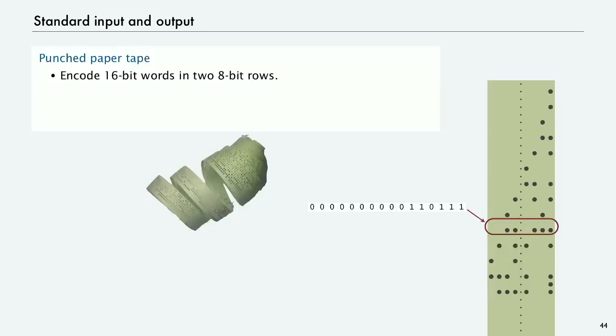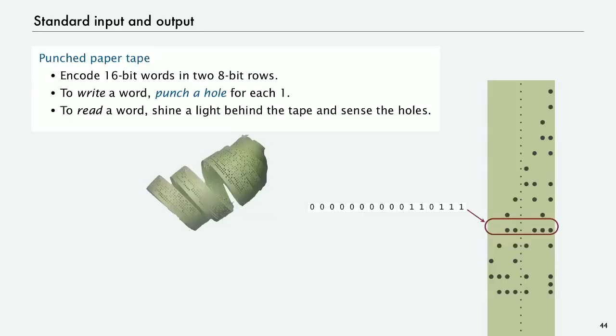And it's got holes punched in it. We encode our 16-bit words in two rows on the tape. So this is a 16-bit word where the first eight bits are zero, then 0011, and then 0111. And then there's little holes in the middle that are sprockets that are used to drive the tape through the tape reader. So to write a word, there's a little thing that can punch the holes and it would just punch a hole corresponding to each one. And to read a word, basically the device would shine a light behind the tape and then on the other side it would sense the holes. And then it would know what's supposed to be zero, what's supposed to be one. And that's it. Very simple device.